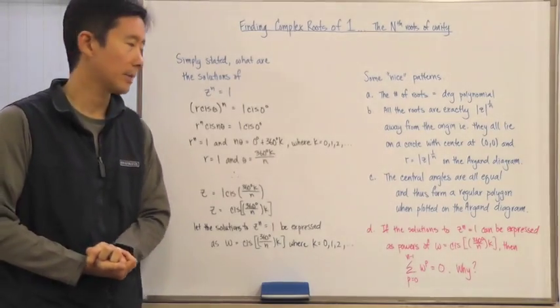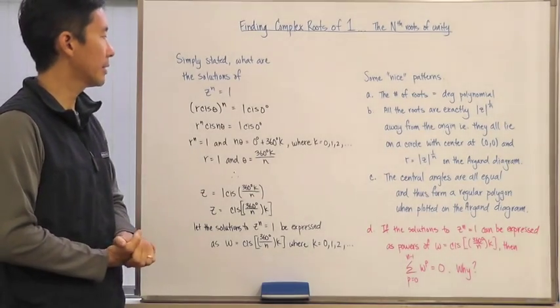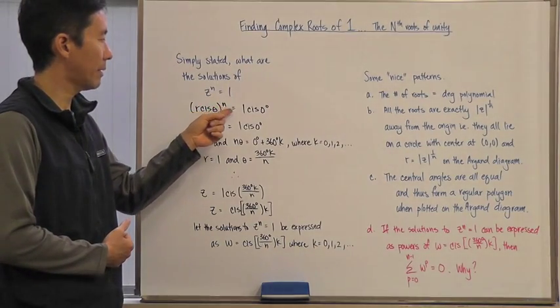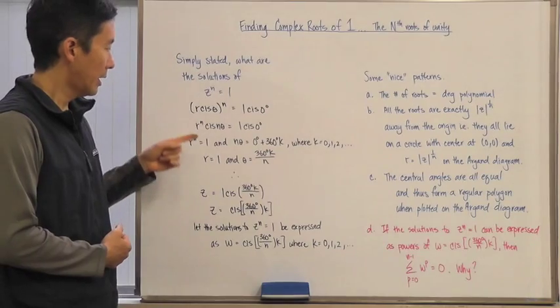The equation looks like z to the n equals 1. Now we've already gone through this process and we said that z is going to be equal to r·cis(θ) raised to the n power, which is equal to 1·cis(θ).